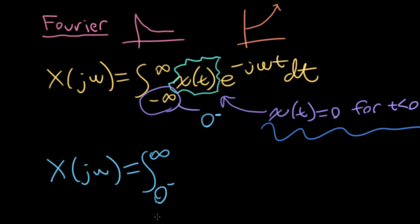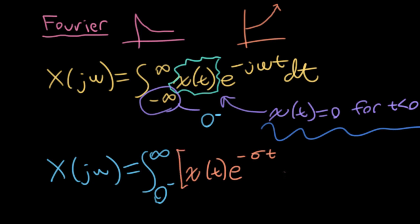I'm going to take a Fourier transform not of x of t, but a modified version of x of t. What I'm going to do is multiply it by e to the minus sigma t. I want to emphasize that this is a sigma and not a sloppily drawn number six. The sigma is just a variable — it doesn't indicate a standard deviation; this isn't a statistics class. So this modified version is now what we're actually taking our Fourier transform of.